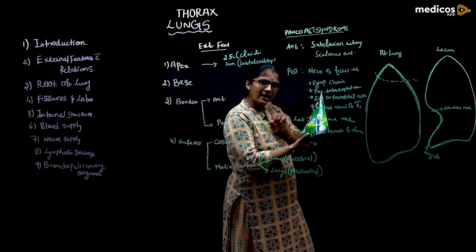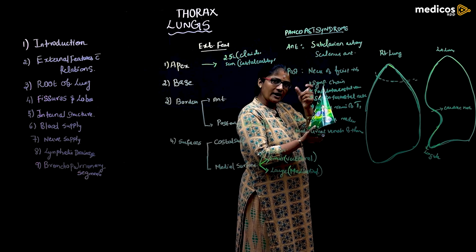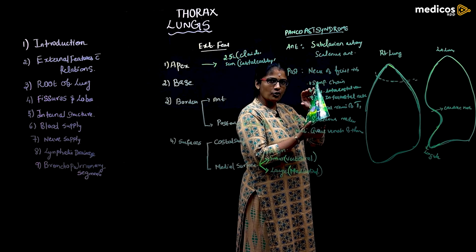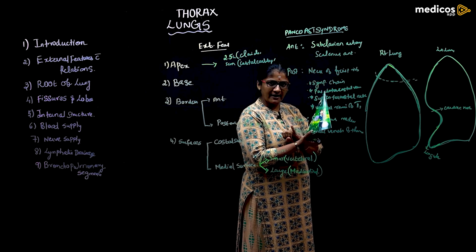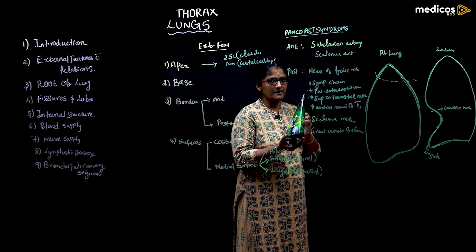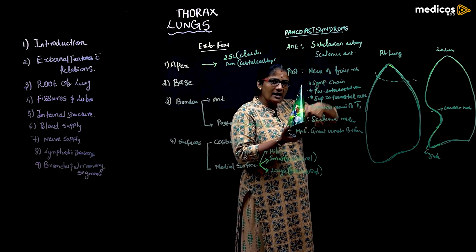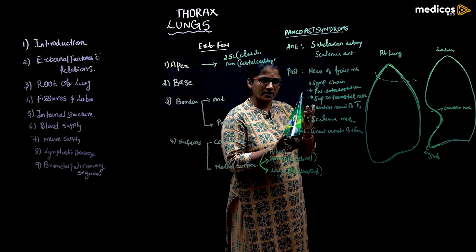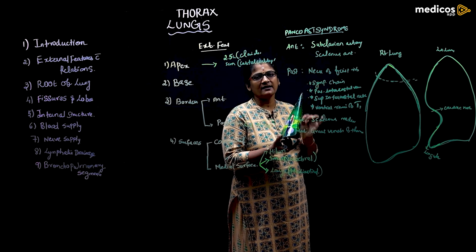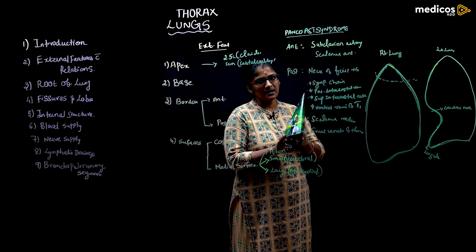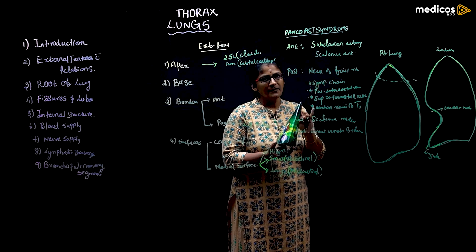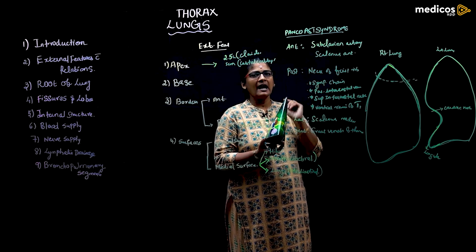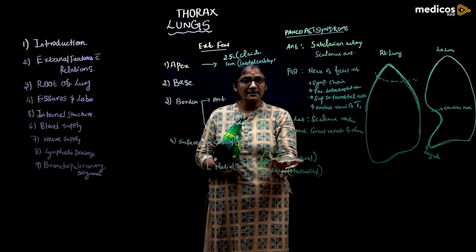The vertebral part is similar for both lungs. It is related to: the vertebral column, the posterior intercostal vessels, and the greater and lesser splanchnic nerves. These are the three main relations of the vertebral part of the medial surface.